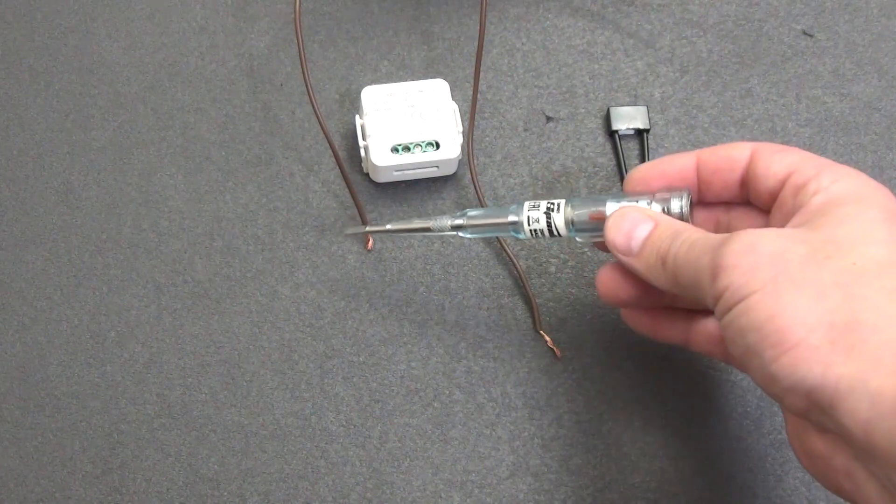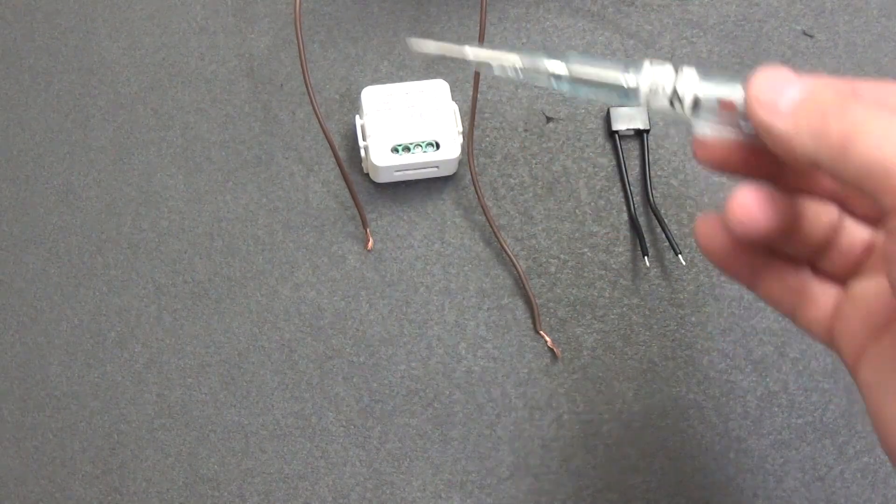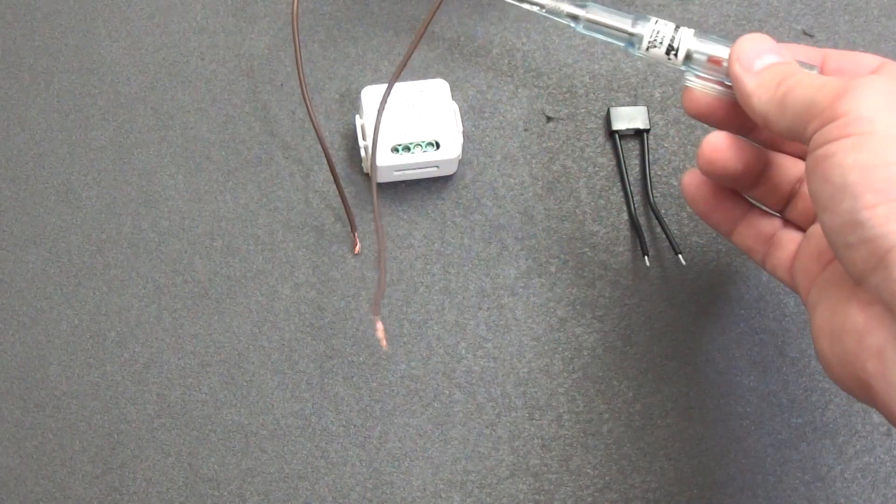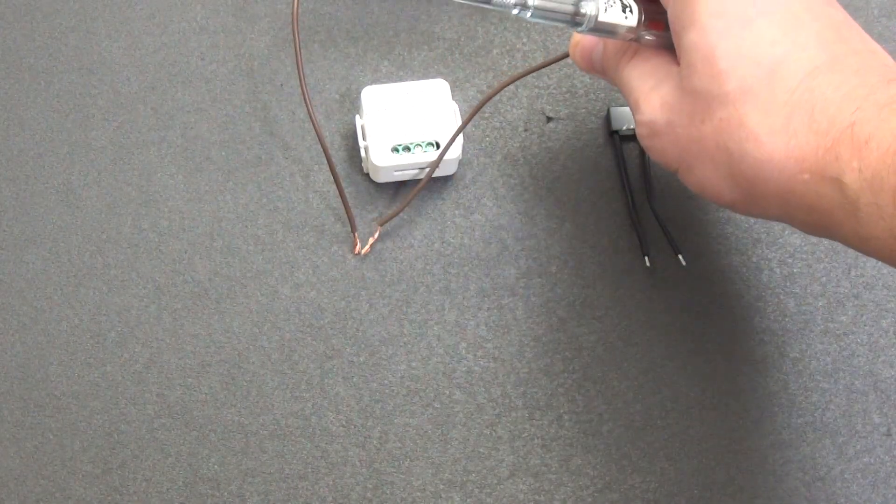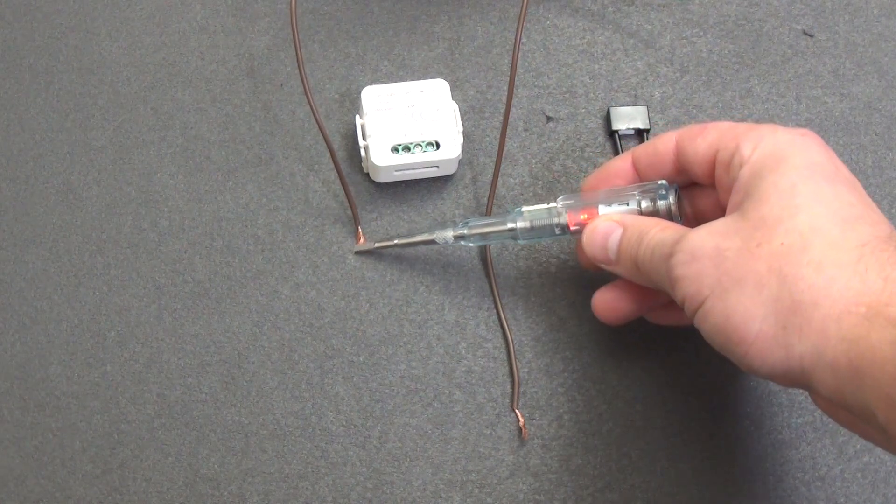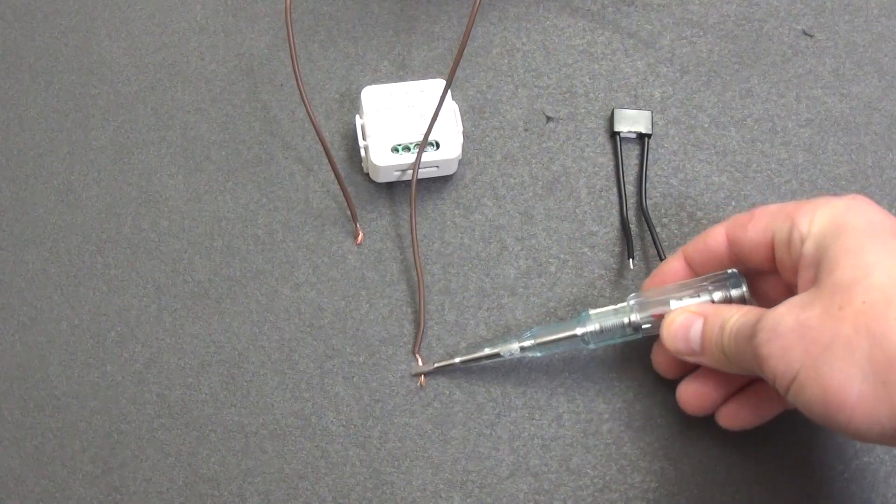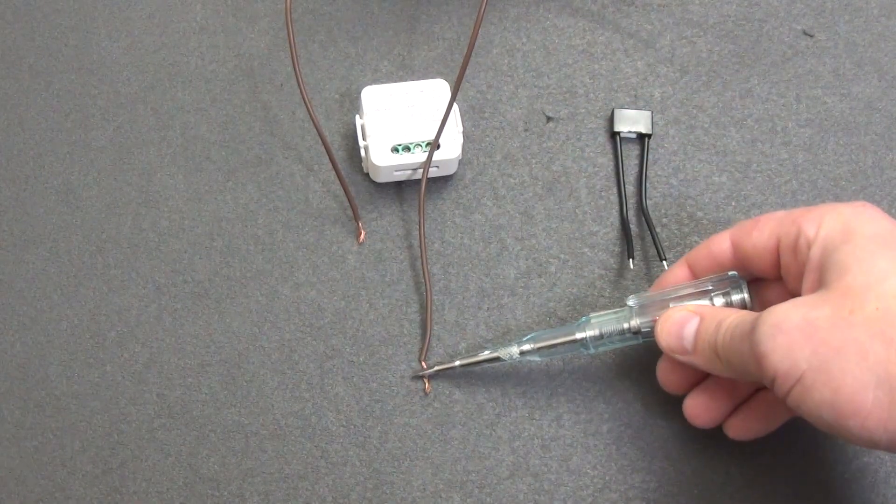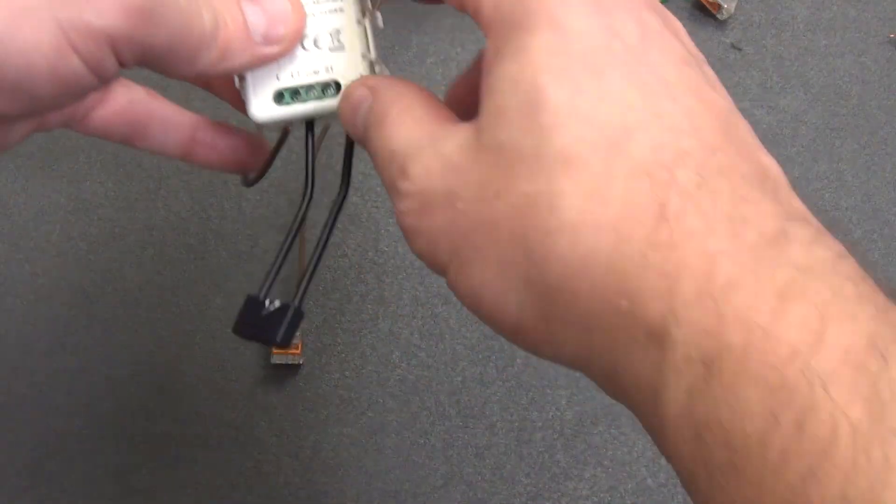And now our indicator screwdriver will come in handy again. I will give a link in the description under the video. How do we determine where in the box we have the wire that is currently under voltage, and the wire to which we need to supply voltage so that the light bulb lights up? We take the indicator screwdriver and bring it close. Here we have the phase, active, the little lamp lights. Phase and output. The switch simply connects them. And here we have its break, the light bulb does not light.